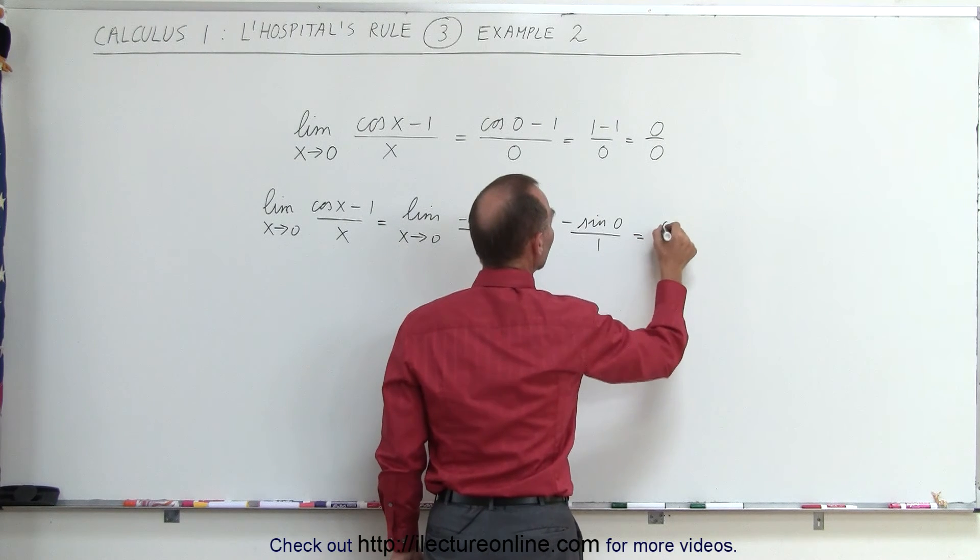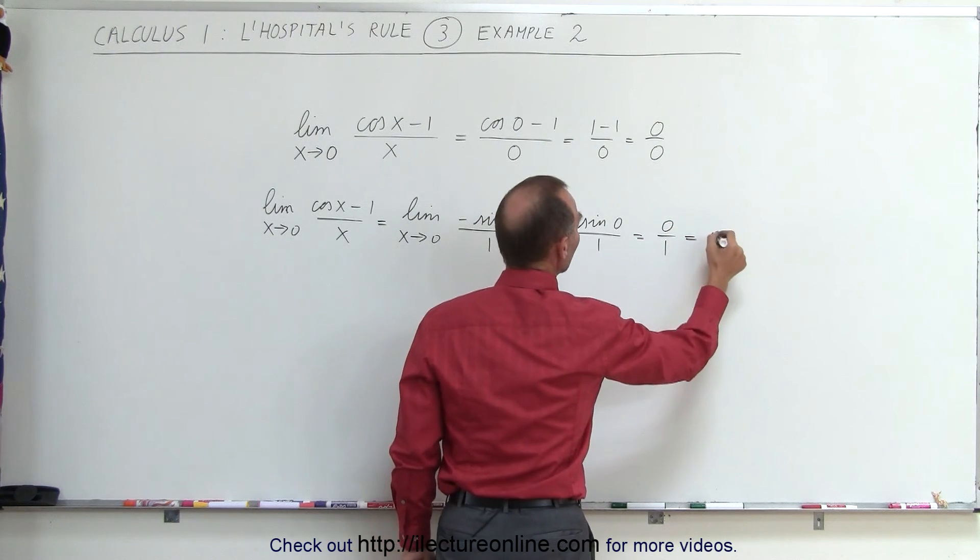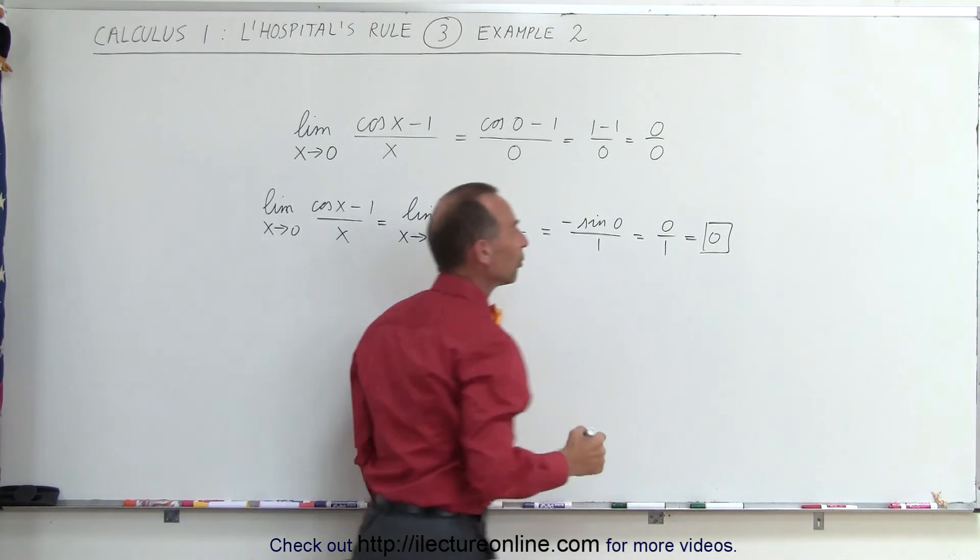But in this case we get 0 divided by 1 which is a valid number. This is equal to 0 and that is an appropriate limit.